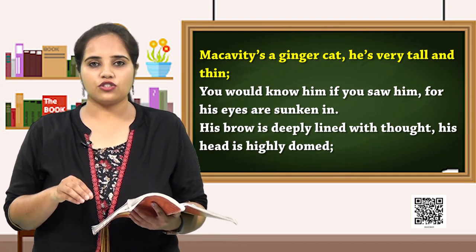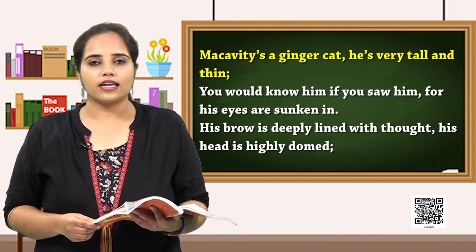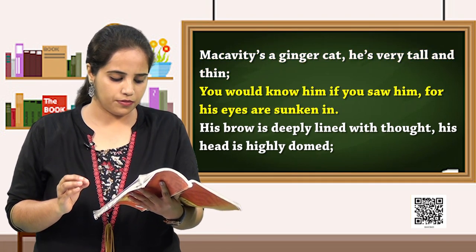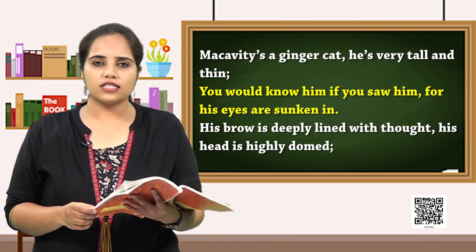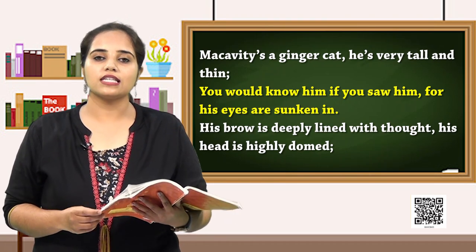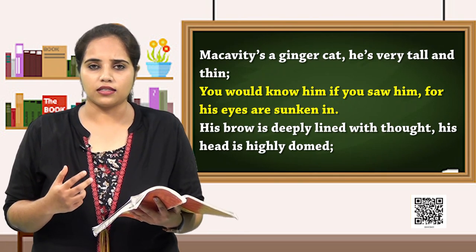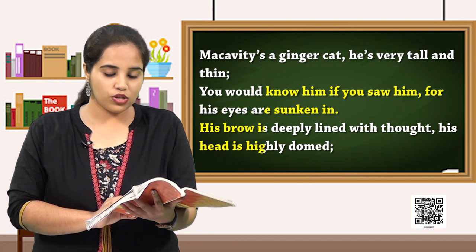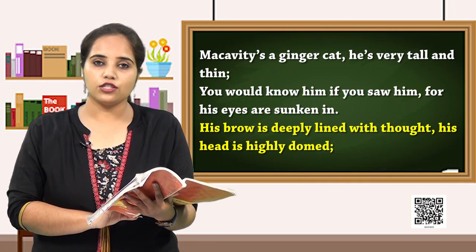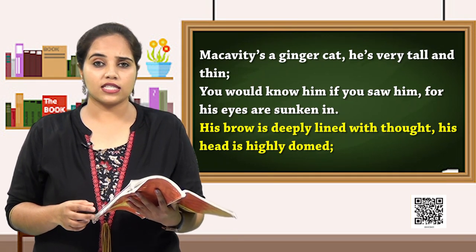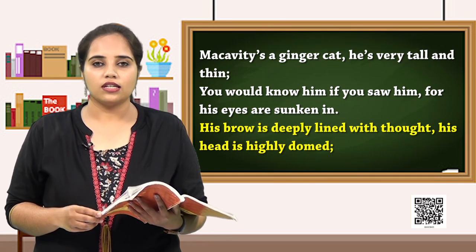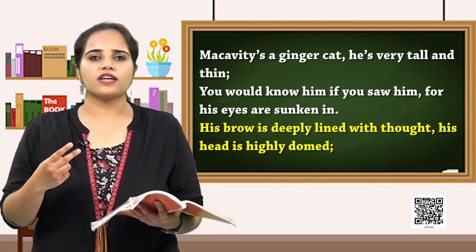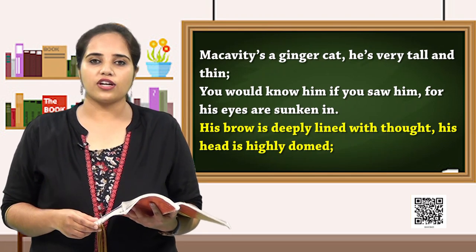So here, especially in this poem, Macavity is seen to be thin and tall, like the usual assumption of a criminal. The next line says 'you would know him if you saw him, for his eyes are sunken in.' The poet is telling us that Macavity, among all other common people, is easily recognizable as a criminal — because his eyes are sunken, deep in mysterious or villainous thinking all the time. His brow is deeply lined with thought and his head is highly domed — his brow is always in a position of deep thought, strategizing things to move into the criminal sector. So Macavity's criminal brain is always on the verge of thinking and rethinking and strategizing for new crimes.